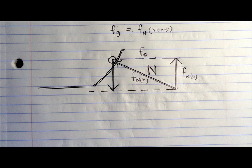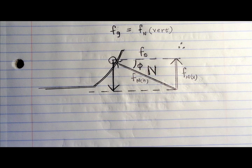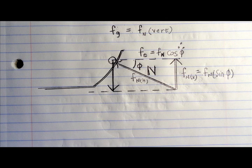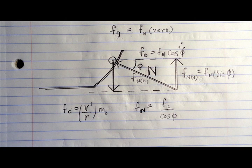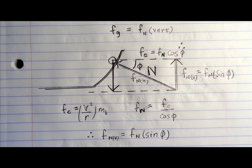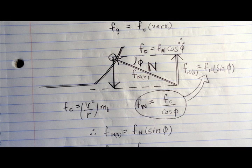We use trigonometry to get the ratio of the horizontal and vertical forces. Since we already know the radial acceleration, we can express the normal force in terms of that. Now we have an expression for the vertical component.